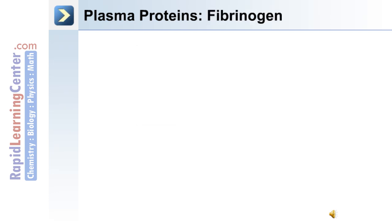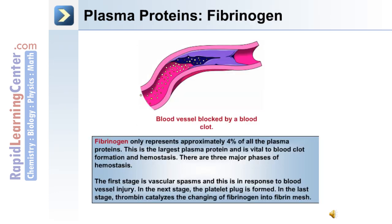The third major class of plasma protein is fibrinogen. Fibrinogen only represents approximately 4% of all the plasma proteins. It's the largest plasma protein, and it's vital to blood clotting. There are three major phases of hemostasis: the first is a vascular spasm in response to blood vessel injury, the next stage is when the platelet plug is formed, and in the last stage, thrombin catalyzes the changing of fibrinogen into a fibrin mesh.